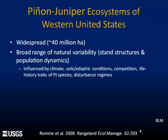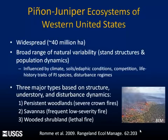PJ systems exhibit a broad range of natural variability in terms of stand structures and population dynamics, influenced by climate, soils, competition, the life history traits of the PJ species themselves, disturbance regimes, and so on. I'll point to the classification provided by Rami et al., which I think is a very practical definition — Pete was a co-author, as was Robin and others. It's practical because it grouped pinyon-juniper ecosystems based on structure and, to some extent, the driving disturbance dynamics behind those structures.